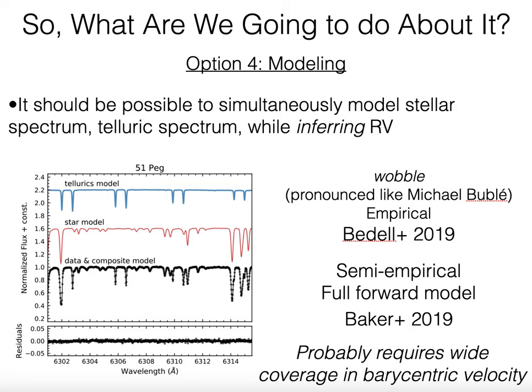Option four is a full-on forward model: you have a spectrum containing stellar and telluric lines and you build up a model of the entire thing. Wobble is an empirical code by Bedell et al. in 2019—shown here with the telluric model in blue for 51 Peg. Ashley Baker recently published a very nice semi-empirical model that is data-driven like Wobble but also includes physics about line shapes and information from HITRAN. These are very promising approaches to simultaneously model the stellar spectrum, the telluric spectrum, and infer the radial velocity. One limitation is that these methods probably require a lot of data and wide barycentric velocity coverage to help separate stellar and telluric lines.